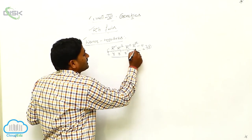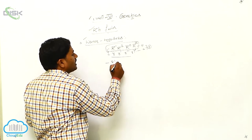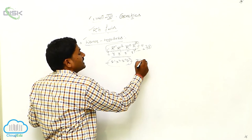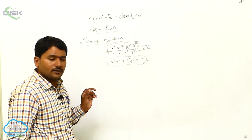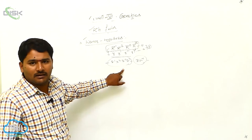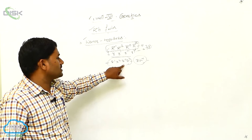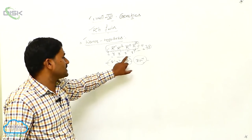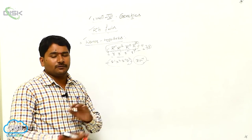Whenever a dominant allele — R1, R2, or R0 — is present, the RH factor is produced. Individuals with any one of these dominant alleles R, R1, R2, R0, or RZ express the RH antigen and belong to the positive blood group.